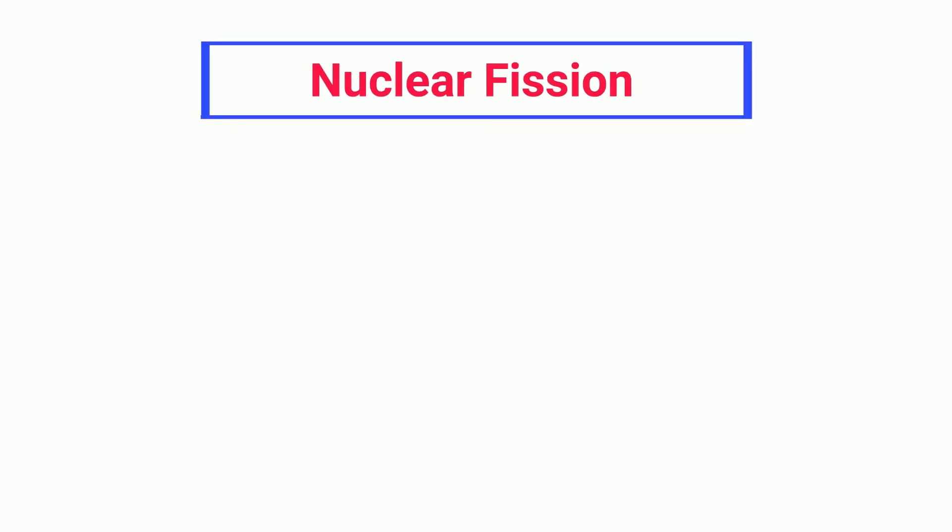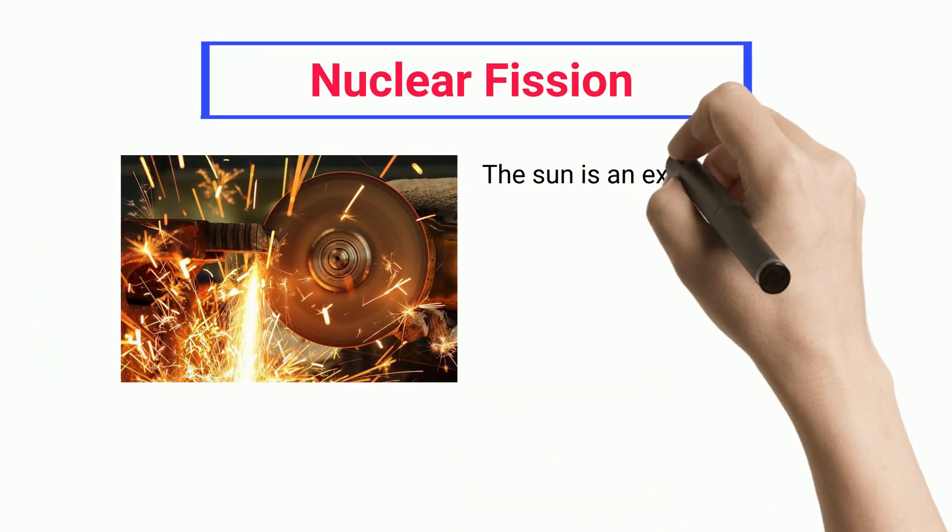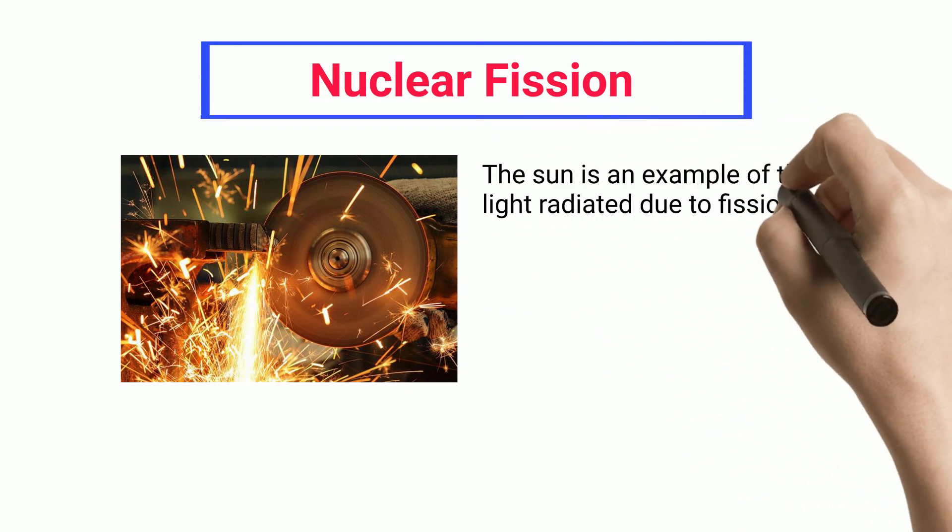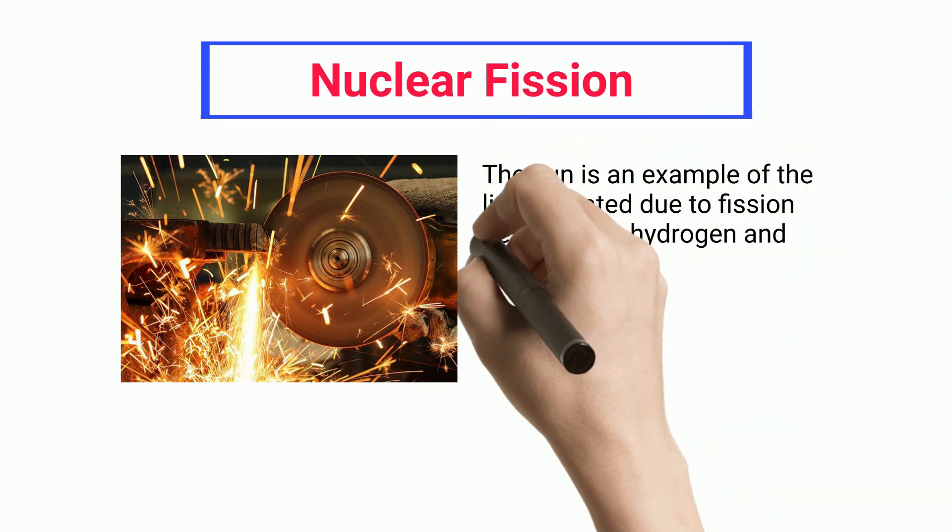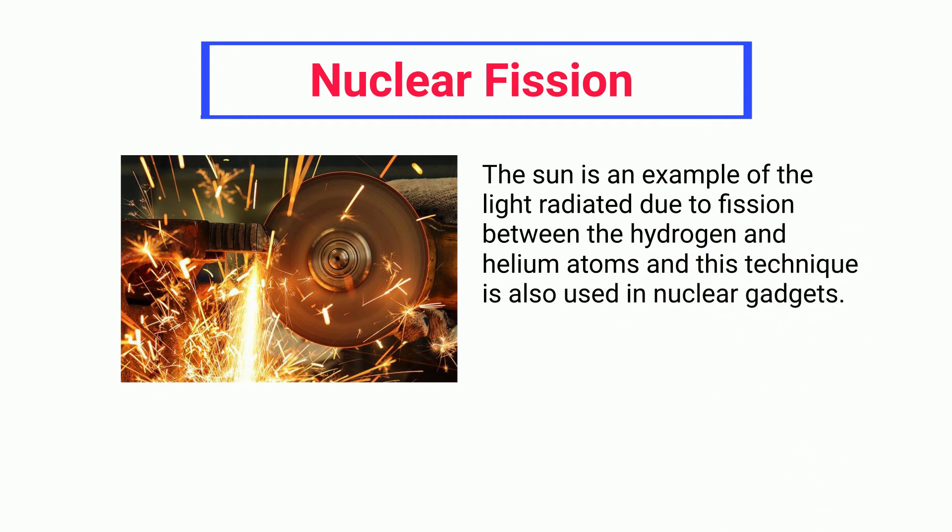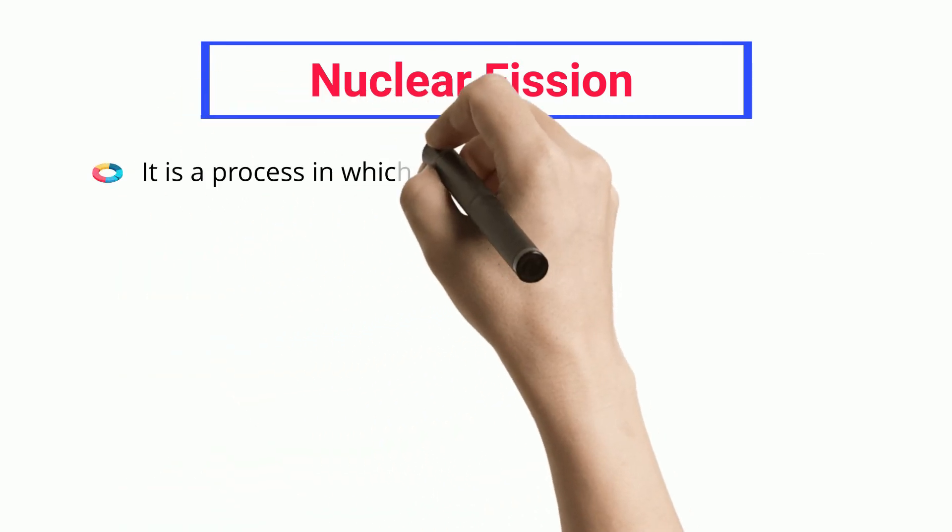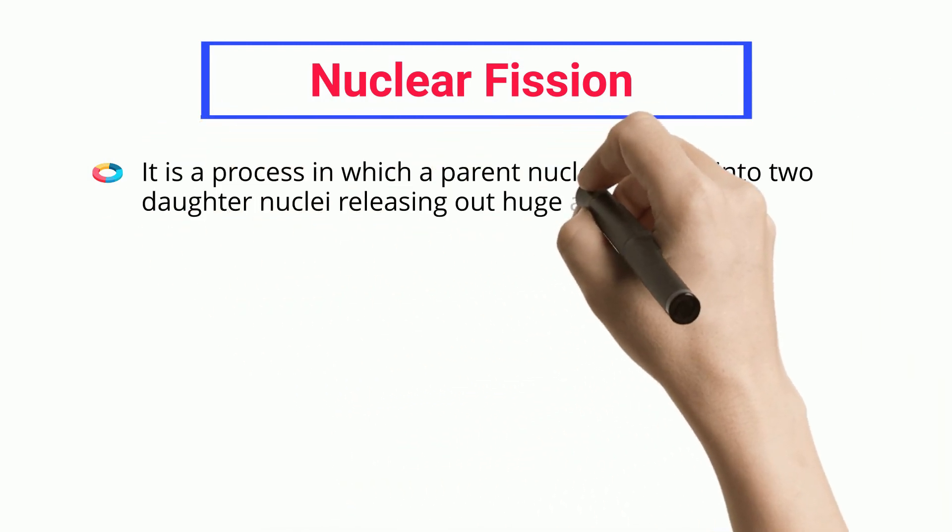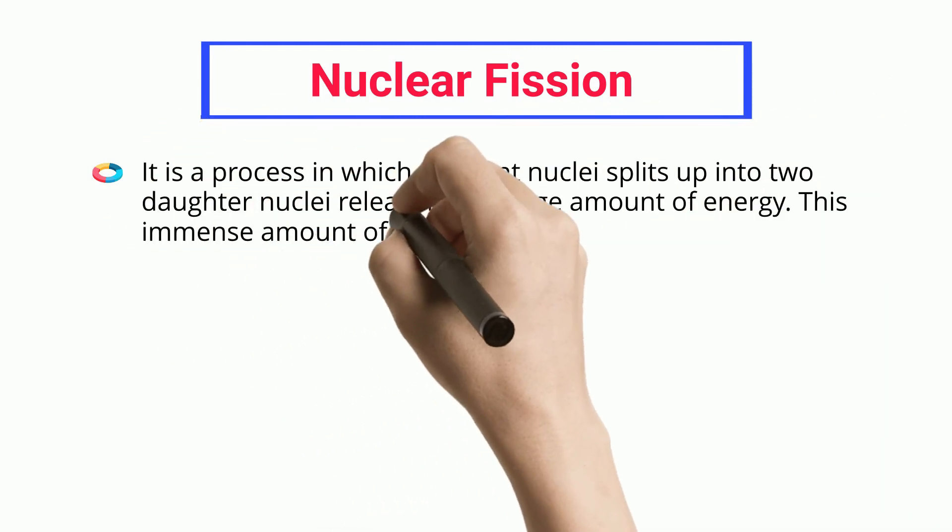Nuclear Fission. The sun is an example of the light radiated due to fission between the hydrogen and helium atoms, and this technique is also used in nuclear gadgets. It is a process in which a parent nuclei splits up into two daughter nuclei releasing a huge amount of energy.